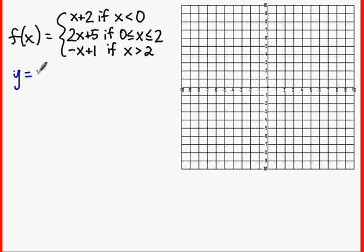We do have three equations here, so what I like to do is rewrite them out as y equals x plus 2, we're going to have another equation y equals 2x plus 5, and then we also have an equation y equals negative x plus 1.